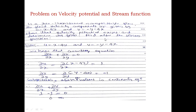To show that velocity potential exists for the given velocity components, the given velocity components must satisfy the continuity equation. Only then can we say that velocity potential exists. So we write the continuity equation for two-dimensional incompressible flow: ∂u/∂x + ∂v/∂y = 0.